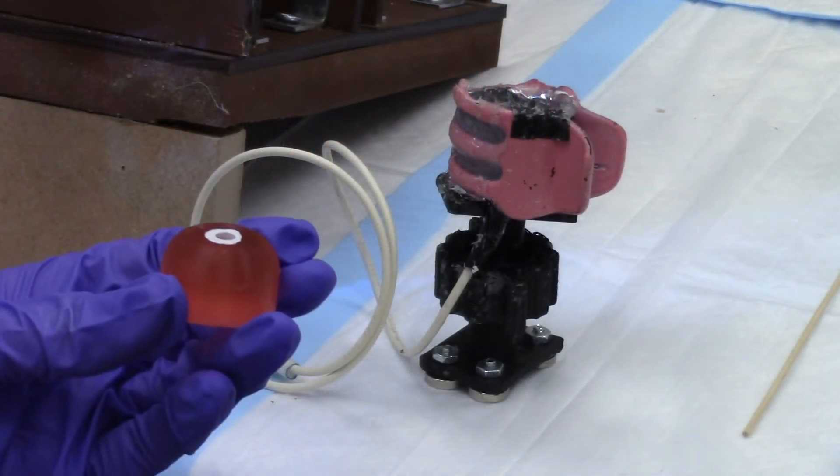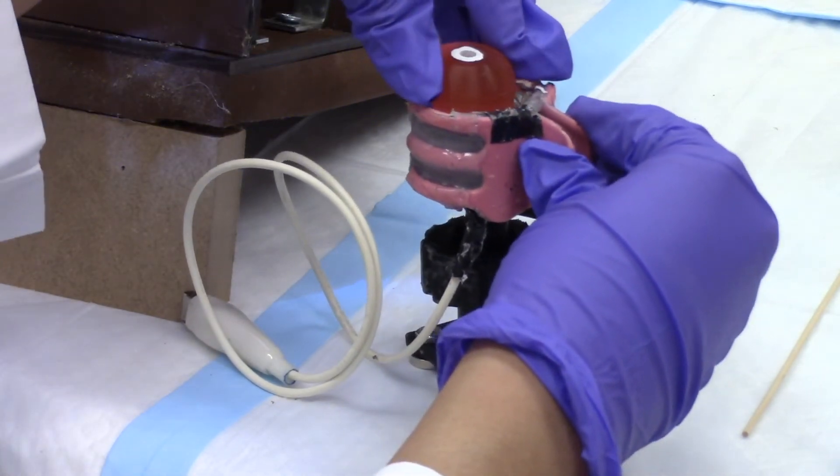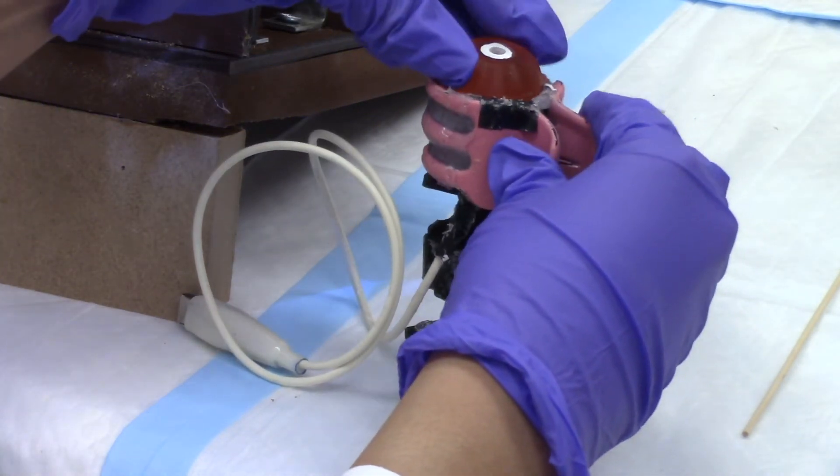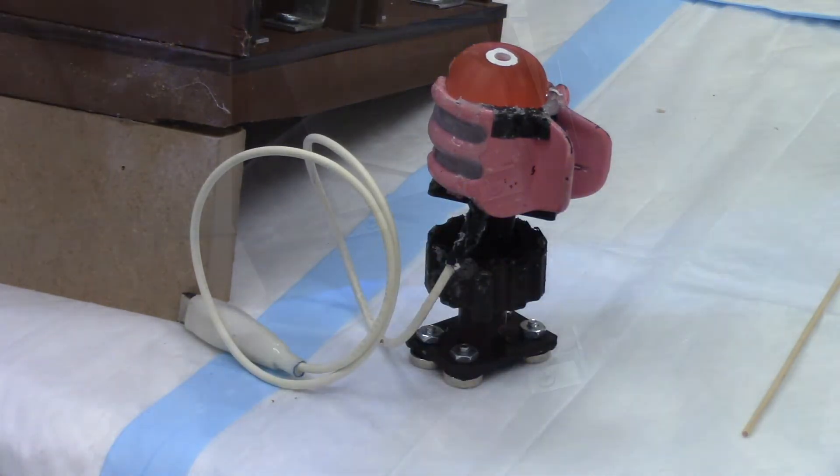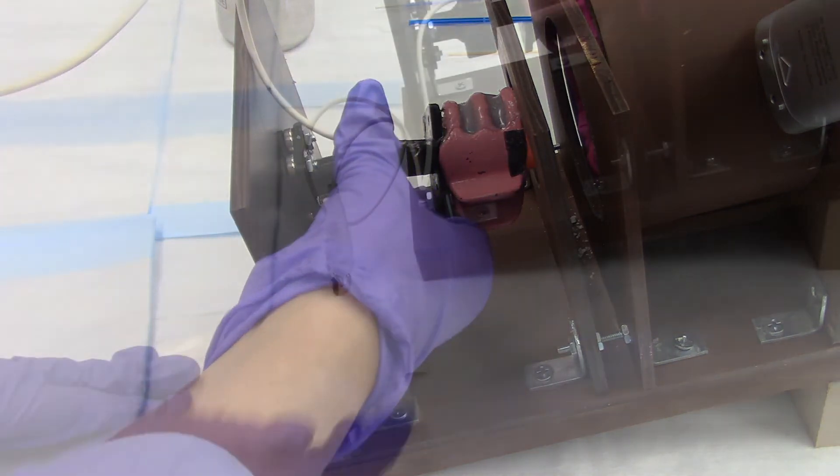Finally, gel models can be used for LEEP training. The gel models used here have a white lesion painted in the center. These models must be inserted into the cervical model holder with a clamp. The cervical model holder is magnetic and is held in place by the magnetic wall at the back of the pelvic frame.